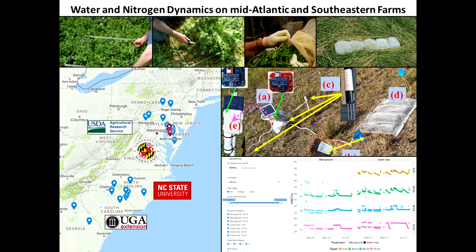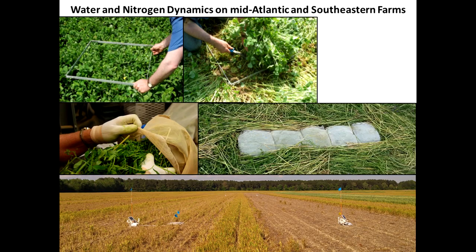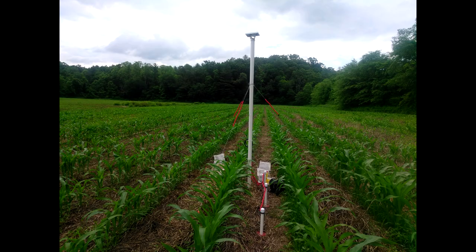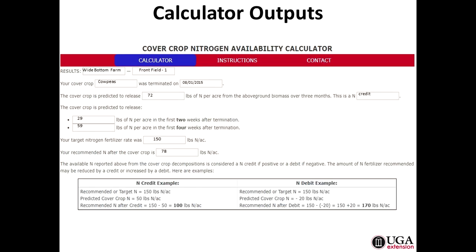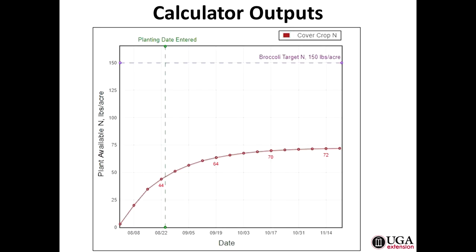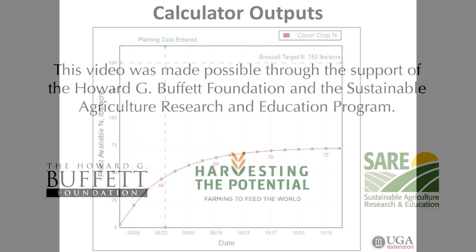We're calibrating decision tools by doing on-farm decomposition studies up and down the East Coast, along with complete water budgets and water infiltration dynamics. We're building on the Georgia calculator and expanding it for a broader region, hoping to partner with organizations like the Soil Health Partnership to extend its application to the Midwest. The tool provides nitrogen release curves to give growers a sense of how nitrogen will behave based on their cover crop, biomass, and quality.